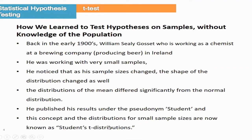So he published his results under the pseudonym 'Student.' For small sample sizes, that test is now known as the Student T-distribution. From the T-distribution we got the T-Test. That is the Student T-Test — T-Test is simply the short name of Student T-Test.